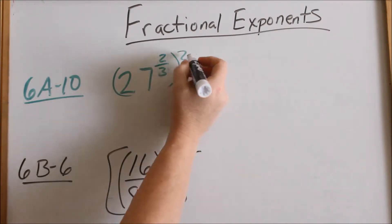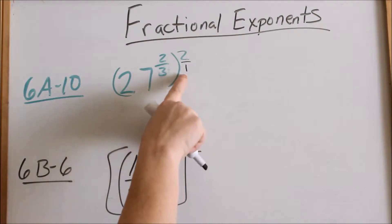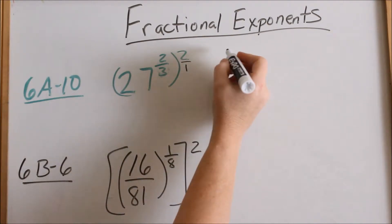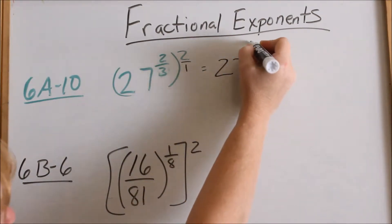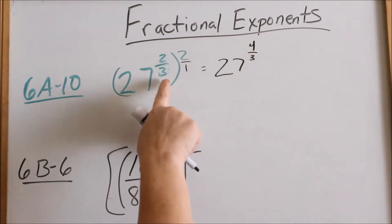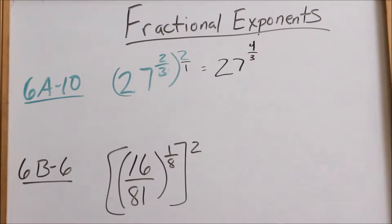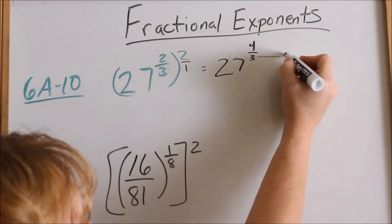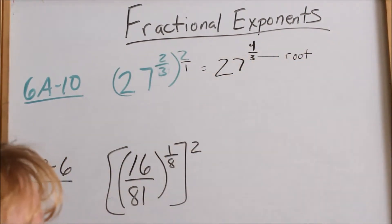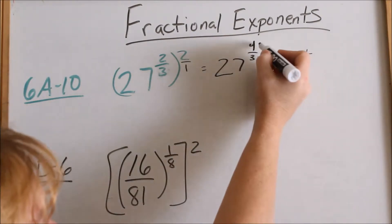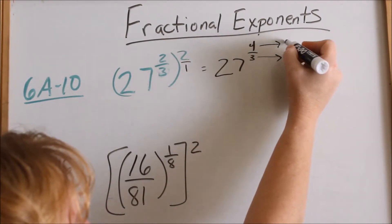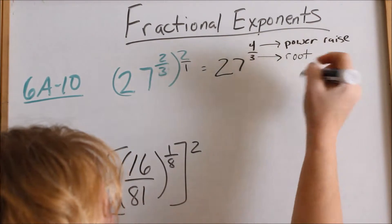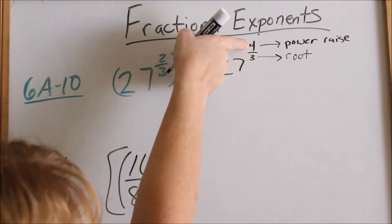Let's say I go ahead and multiply these. I can turn any number into a fraction by putting it over 1. So if I multiply these, I now have 27 to the 4/3 power, because a fraction multiplied by a fraction — you just multiply straight across: numerator to numerator, denominator to denominator. Now when you have a fractional exponent, your denominator means what root you are taking — square root, cube root, 4th root. Your numerator tells you what power you are raising to: square, cube, 4th.